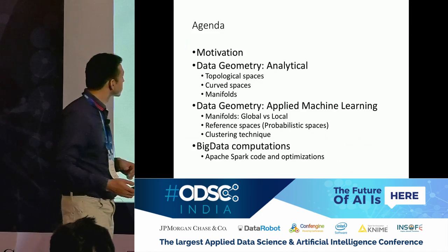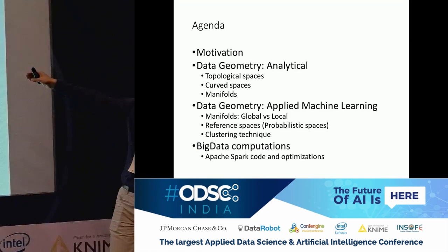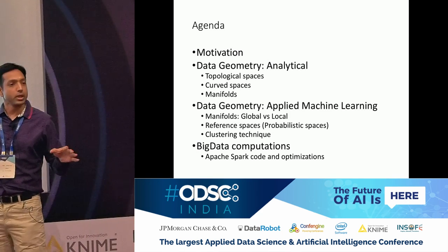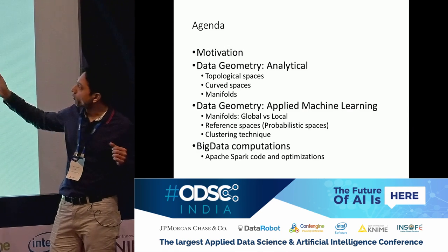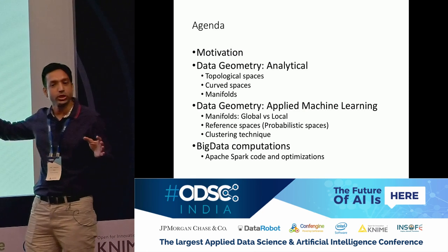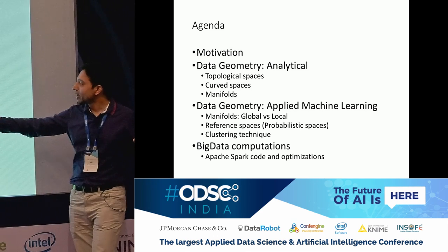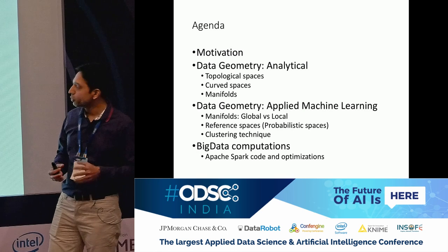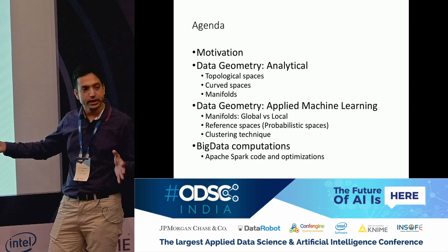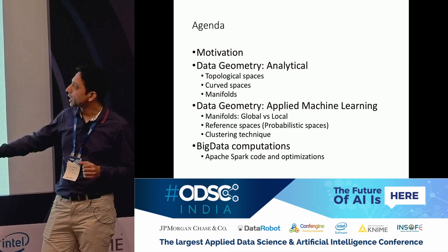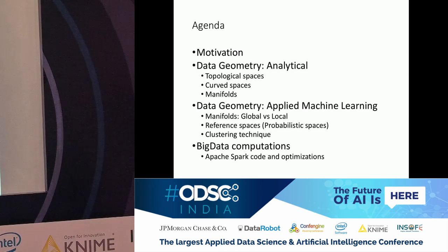How do we solve real-world problems, figure out unsupervised machine learning problems, and finally get things working? I'll quickly go through the agenda. There are three main themes I want to cover: first, the motivation of data geometry — what do I mean by data geometry and how can we understand it. Then an analytical part, which is mostly theory — it will be short. Then the applied machine learning part with examples: how manifolds work, what spaces are. Last is the technology part — how to do the same things in big data.